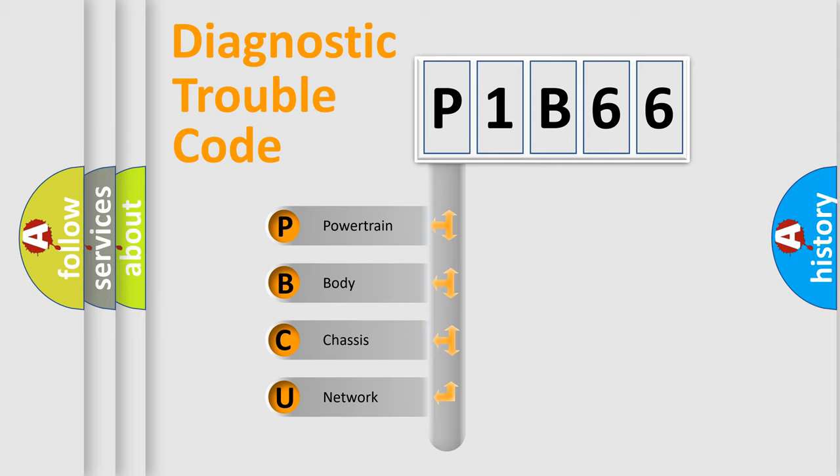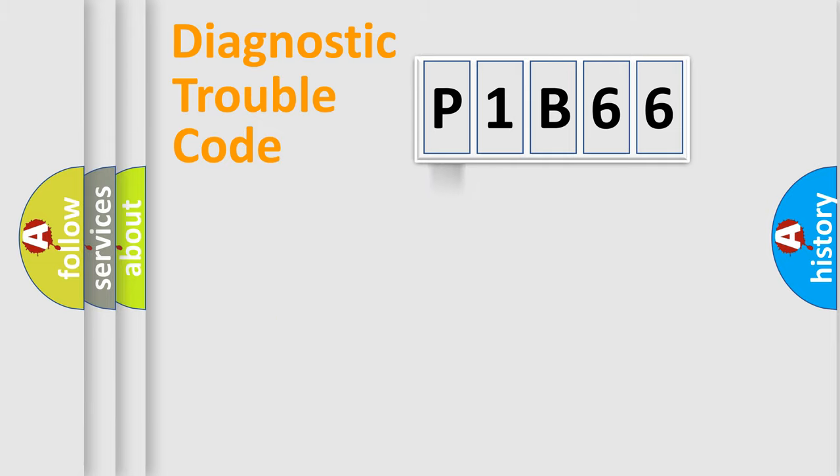We divide the electric system of automobile into four basic units: Powertrain, Body, Chassis, and Network.